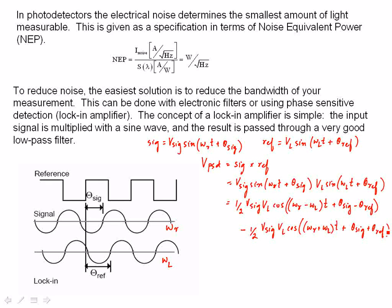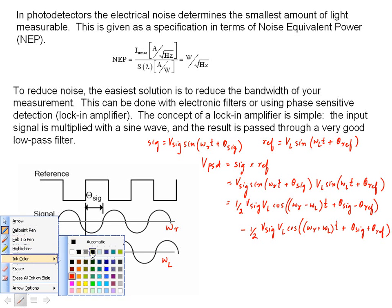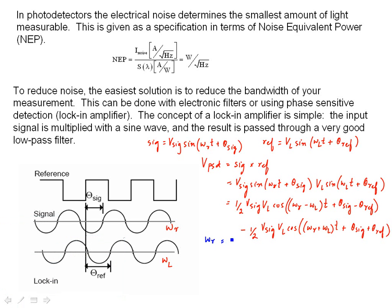Now, if you pass this PSD output through a low-pass filter, assuming that the two frequencies, that is, omega r is equal to omega l, then what you get as the low-pass filter output is the sum frequency component is attenuated, and the result is a DC signal, DC output at the difference, which is expressed as half sig. Okay, so that's the output at the low-pass filter.